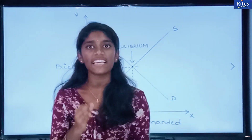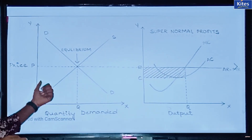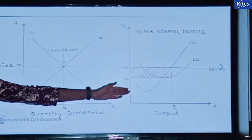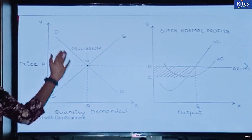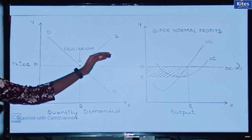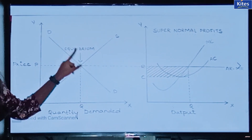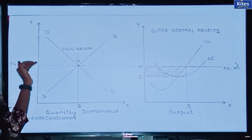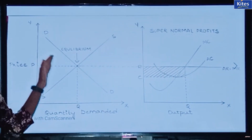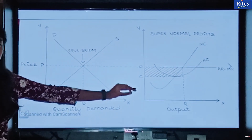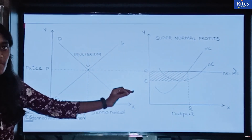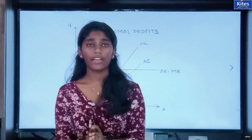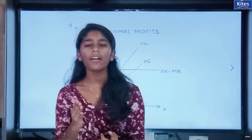The industry will be at equilibrium at a certain price, and that price which is determined by the industry is passed over to the firm. Here you can see this is the industry, which is the price giver, and that would be your firm, which is the price taker. The demand and supply of the industry meet at the equilibrium point of the industry, so that price is carried forward to the firm, which will take that price and continue its output.